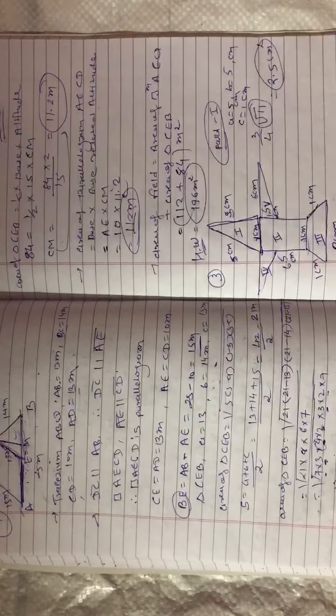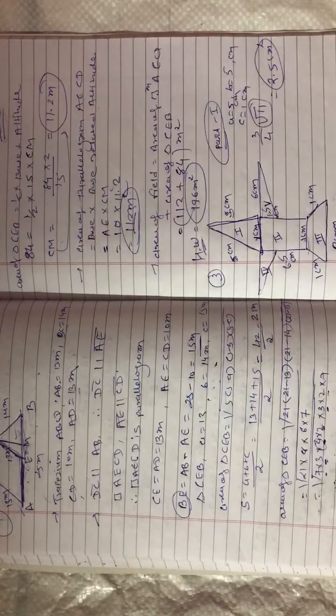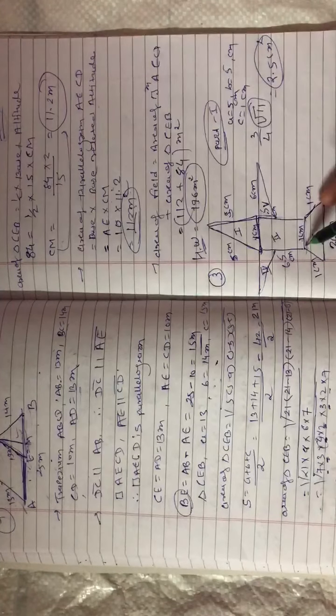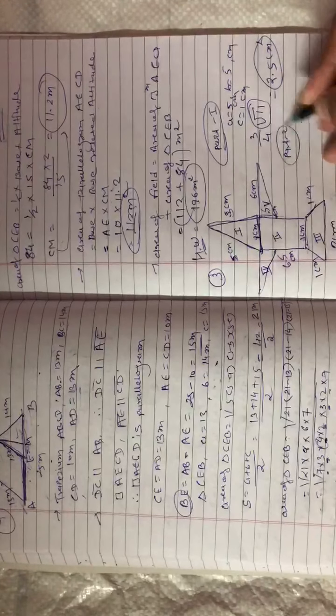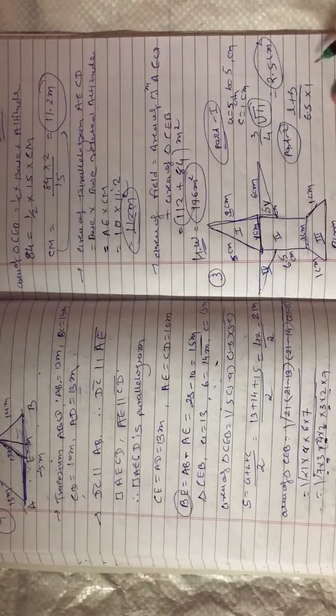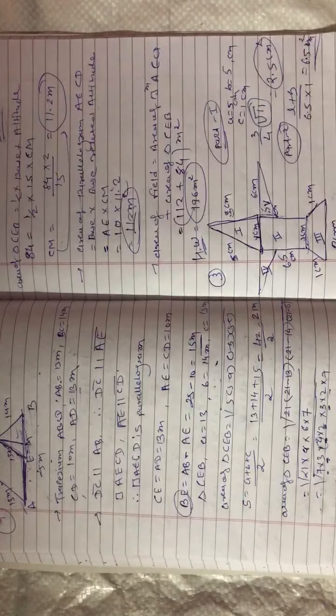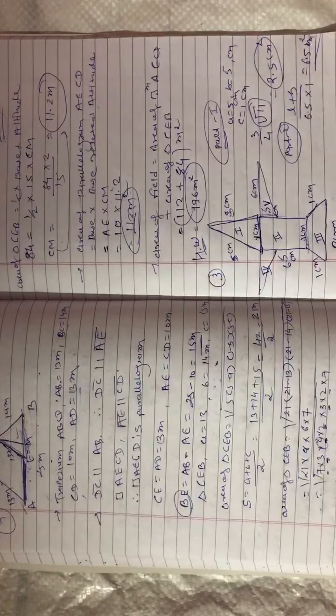For Part 2, the shape is a rectangle. Area of rectangle equals length × breadth. Length is 6.5 cm and breadth is 1 cm, so the area of Part 2 is 6.5 square centimeters.